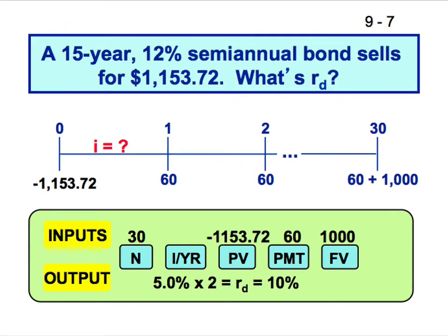There are three parts: bonds, preferred stock, and equity. Consider a 15-year, 12% semi-annual bond that sells for $1,153.72. The cost of debt RD: since it's semi-annual, 12% becomes $60 per period. The final payment is $60 plus $1,000 face value. With N = 30, PV = price, PMT = 60, FV = 1,000, computing I/Y gives 5% for six months, so the annual cost of debt is 10%.